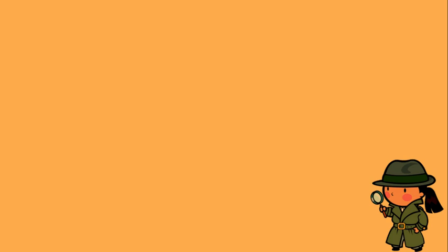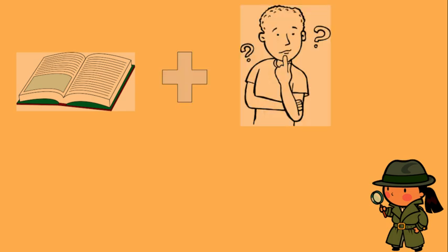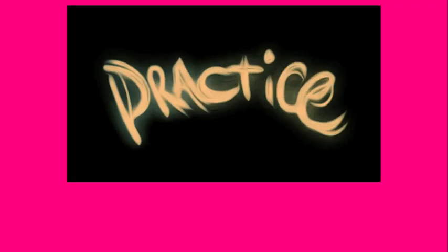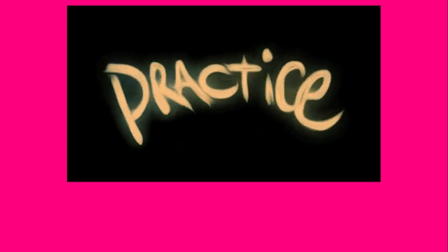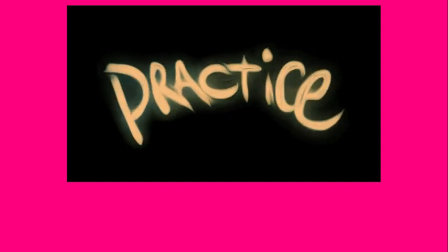All right, let's go ahead and get started. Just to review, when you make an inference, it's kind of like being a detective. You'll use the clues that you read in a text, plus you'll use what you already know — which is your background knowledge — to come up with an idea that the author hasn't explicitly written in the text. The only way to get good at making inferences is really to practice and really think about a text as you are reading it.